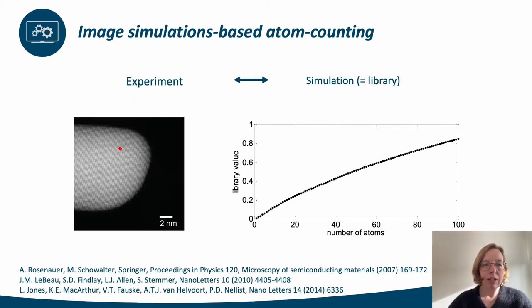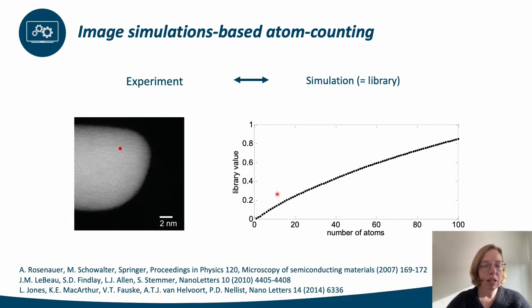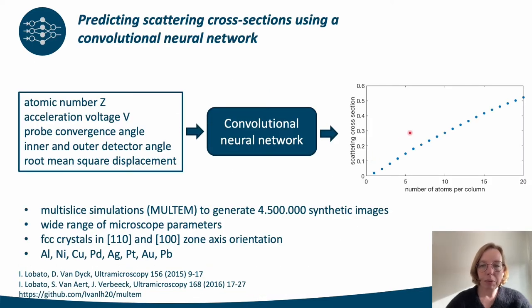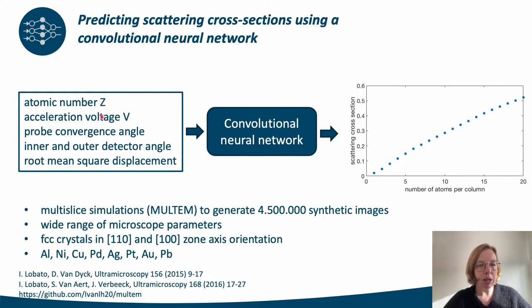The estimated scattering cross-sections can now be used for atom counting. The most straightforward manner is to directly compare them with simulated scattering cross-sections as a function of thickness. Here you see a library of simulated scattering cross-sections as a function of the number of gold atoms, which can be used to assign the number of atoms for each atomic column for this gold nanorod. However, generating these library values can be very time consuming. Therefore, Ivan Lopato trained a convolutional neural network that can be used to predict scattering cross-sections as a function of the number of atoms for a given atomic number, acceleration voltage, probe convergence angle, and inner and outer detector angle, among other parameters.